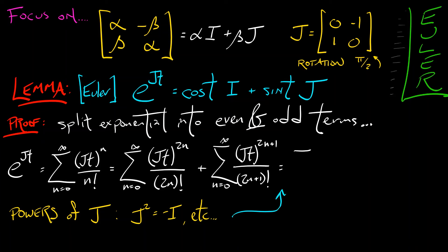The first term is the sum n goes from 0 to infinity of what? I really have negative 1 to the n times the identity matrix times T to the 2n divided by 2n factorial. And then the odd terms become the sum n goes from 0 to infinity, negative 1 to the n times J times T to the 2n plus 1 divided by 2n plus 1 factorial.